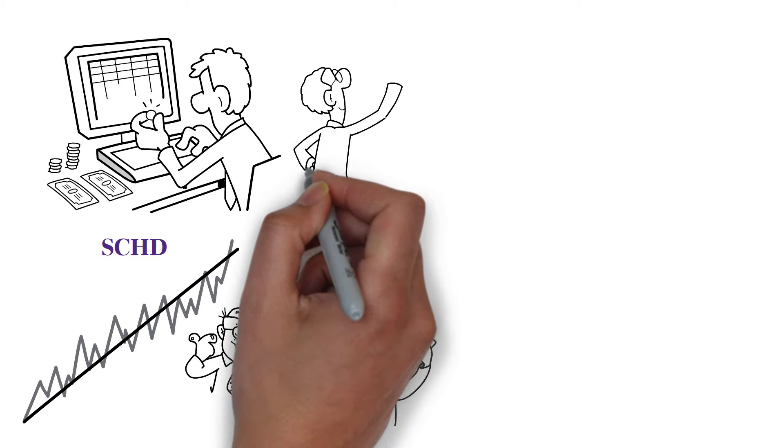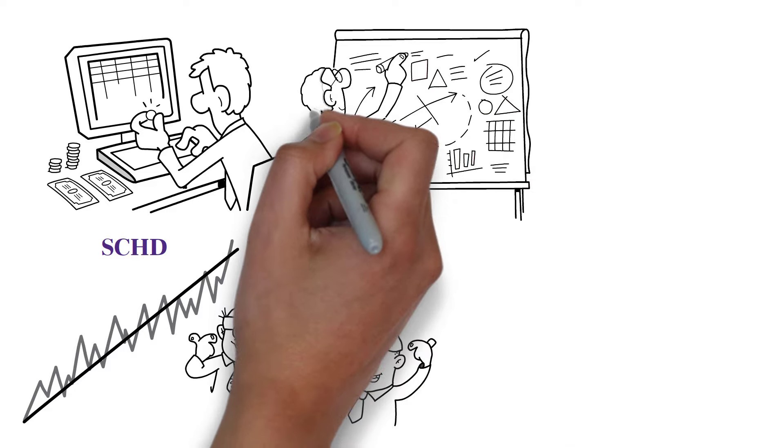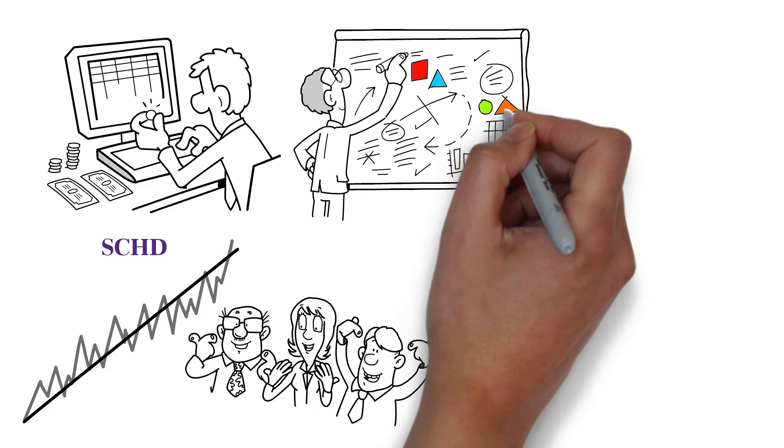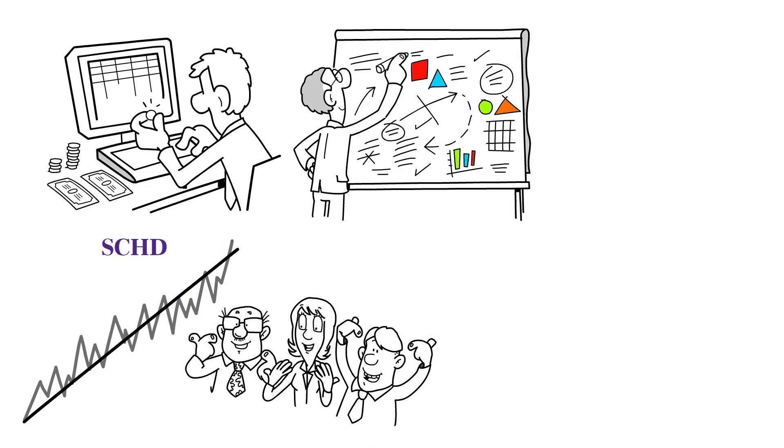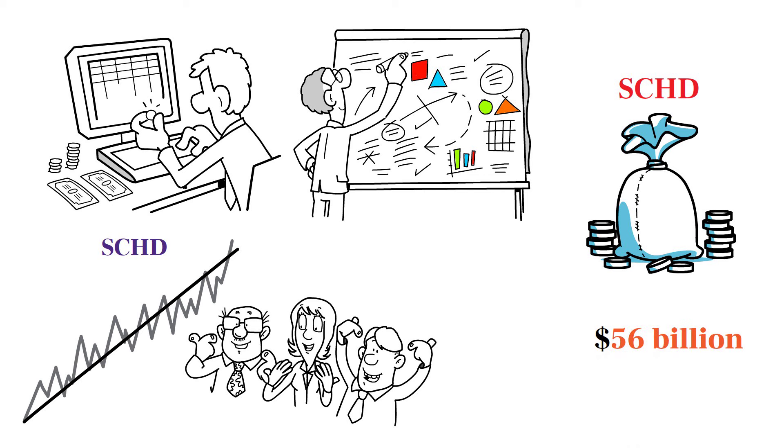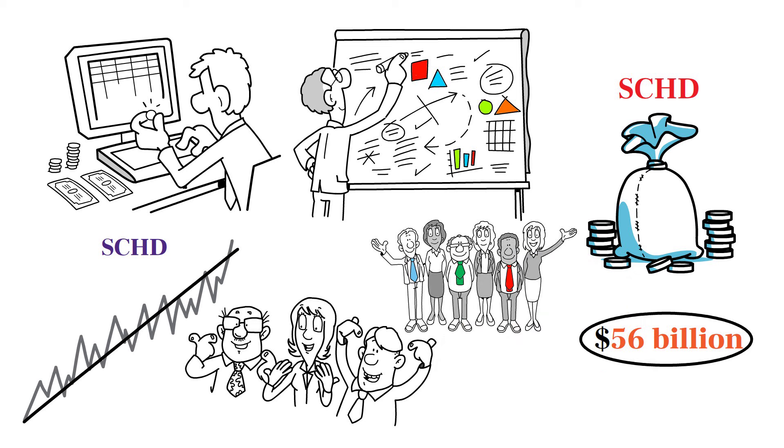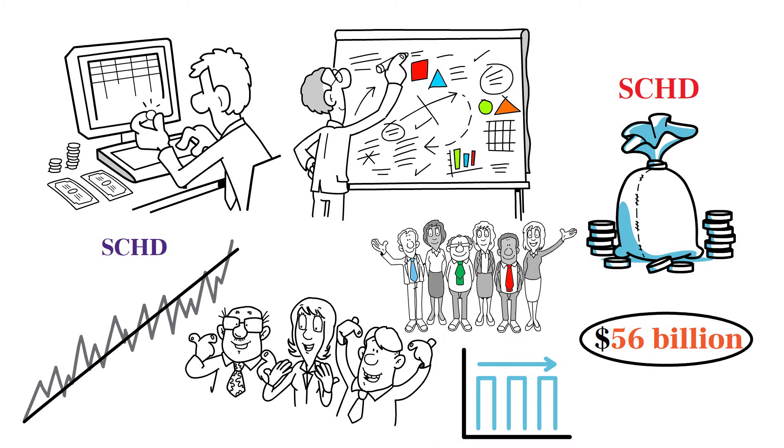Let's take a look at SCHD's recent market performance to understand its current standing and appeal. As of the latest data, SCHD manages a substantial asset base totaling approximately $56 billion. This large asset base is indicative of the trust and confidence that a broad spectrum of investors place in the ETF, reflecting its reputation and perceived stability in the market.